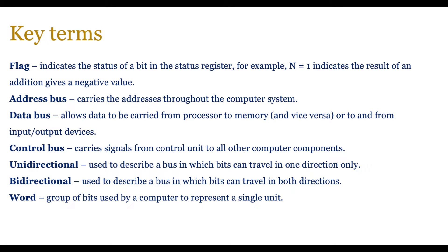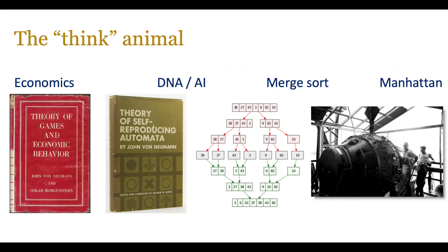Make sure you get all these key terms down and, more importantly, understand what they mean. Let's delve into a bit of history about where this architecture came from and why we need computer architecture in the first place. We'll start by talking about the 'Think Animal' — the name given by Einstein to von Neumann, because he thought about a variety of disciplines and made a significant impact in each one, from game theory in economics to DNA and AI, to mathematics, and even working on the Manhattan Project which developed the first nuclear bomb in the 1940s.